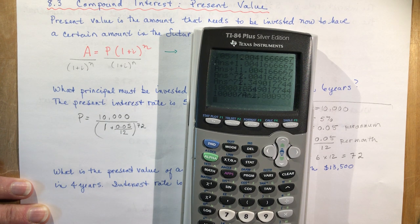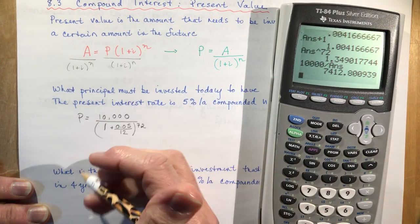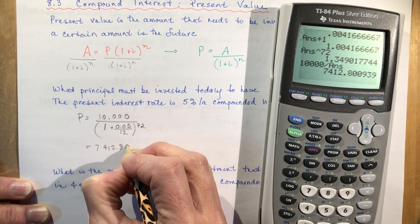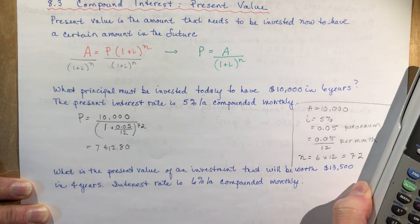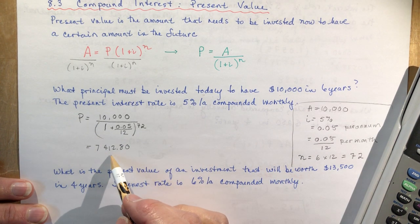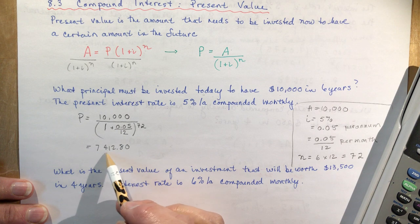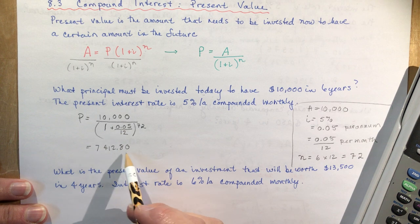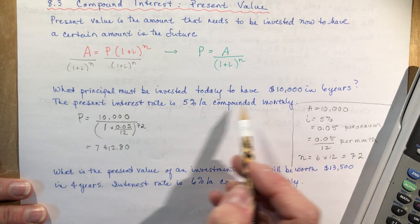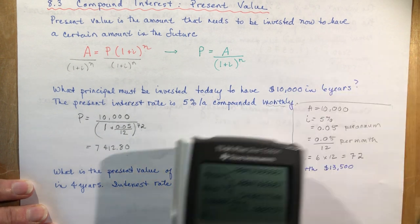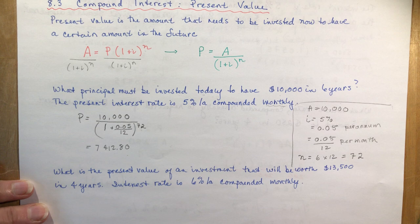Dividing ten thousand by that denominator gives seven thousand four hundred and twelve dollars and eighty cents. That makes sense — after you've done a calculation, especially a word problem, check whether the answer is reasonable. If you got an answer bigger than ten thousand, that wouldn't make sense at all. At five percent compounded monthly, always adjust things to the correct term.